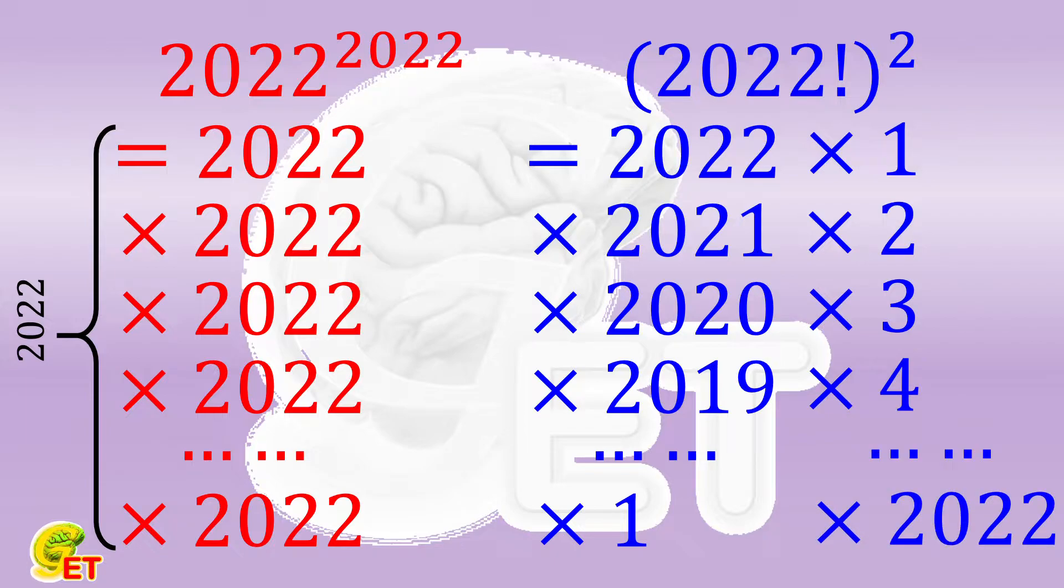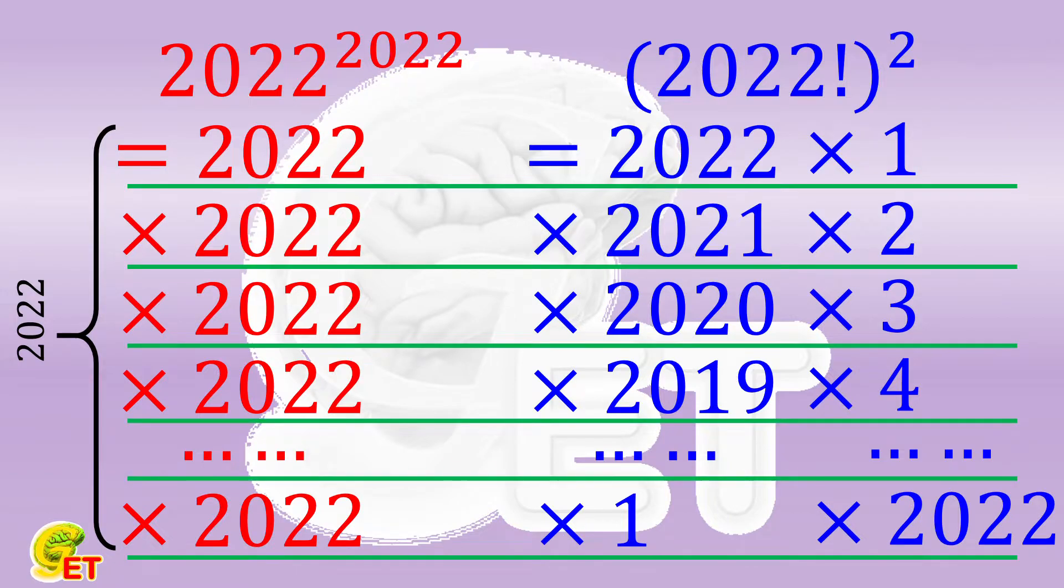In this way, we can compare those two big numbers by comparing every pair of factors. Except for the first and last pair where the left and right sides are equal, the left side is always smaller than the right side in the comparison of any other pair.